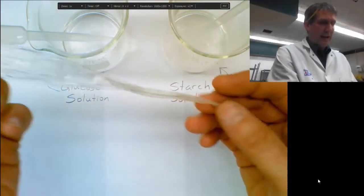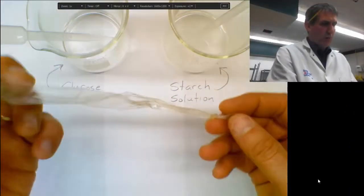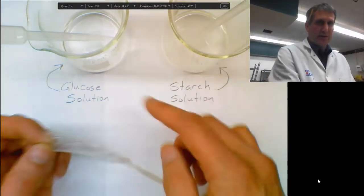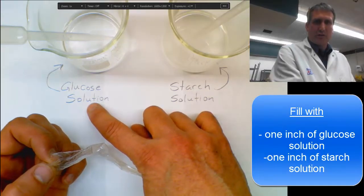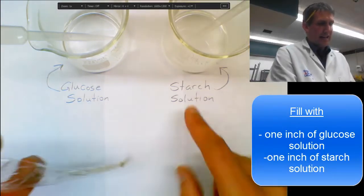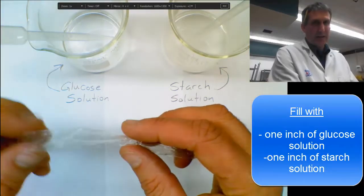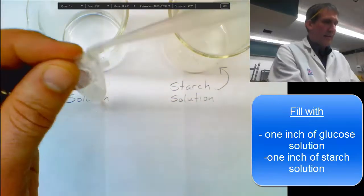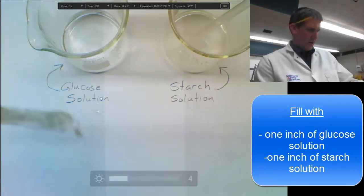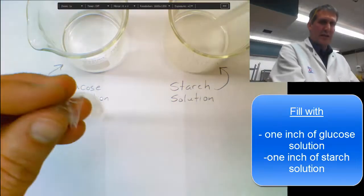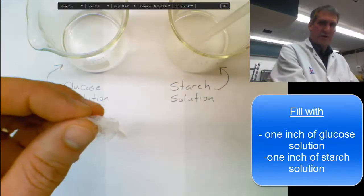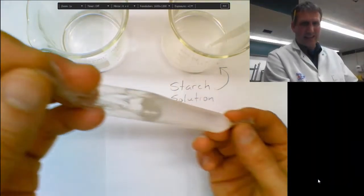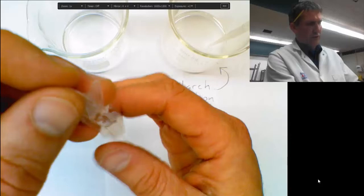Okay so in this next part we have our dialysis tubing, we've put it under the water and we've tied off one end and we have one end open. Now we're going to fill about an inch of glucose solution in here and an inch of starch solution and you want to leave a good inch and a half at the other end so you can tie off the other end and that's actually a good amount. You see how I have an inch of glucose solution. Now I'm going to add my starch solution. That's actually plenty, a big enough cell and I still have enough left over to tie it off.